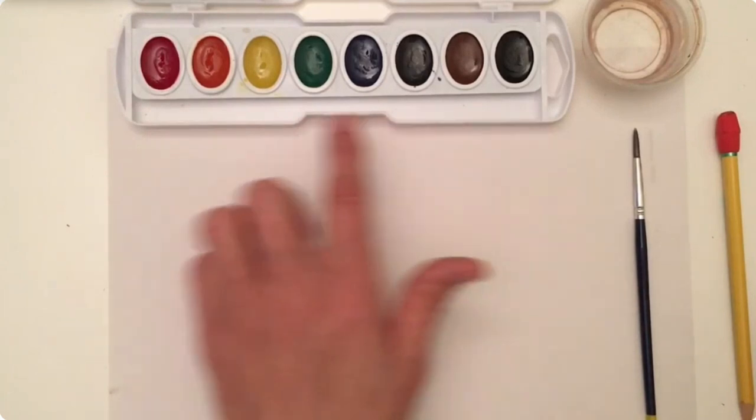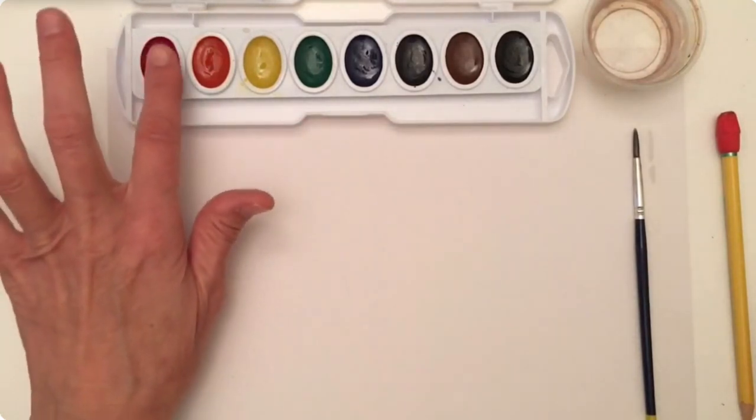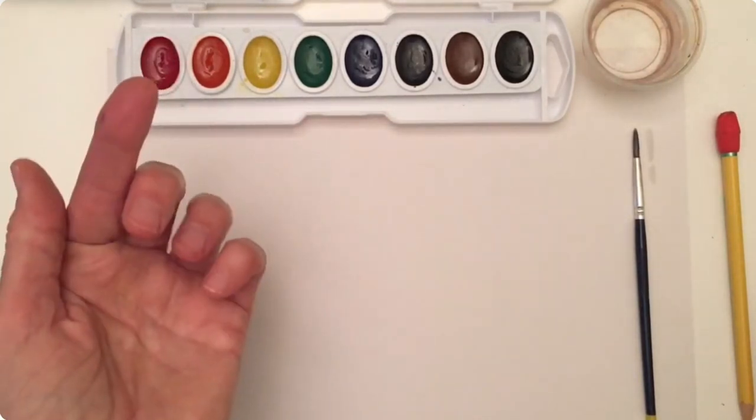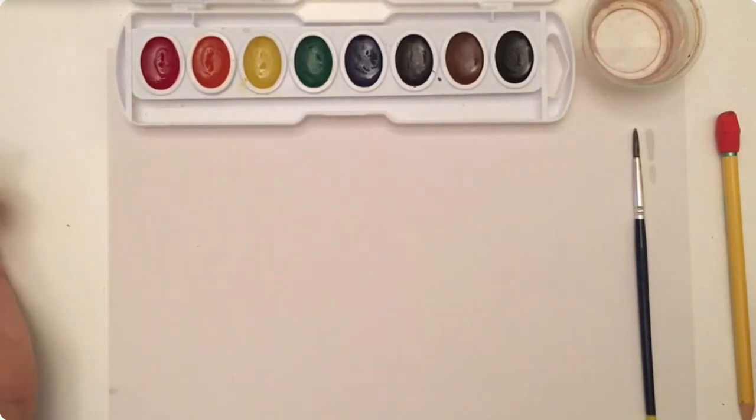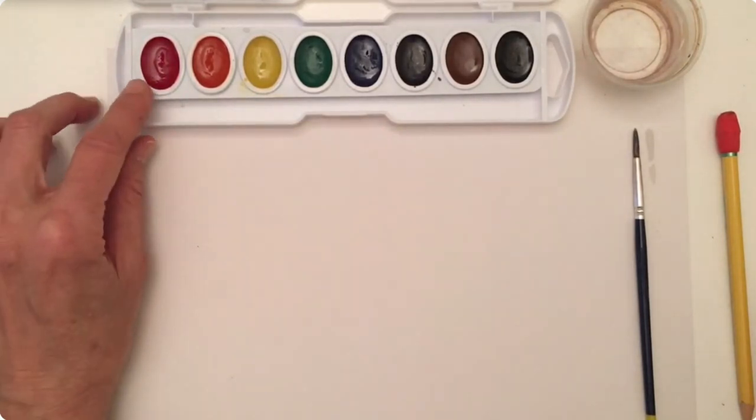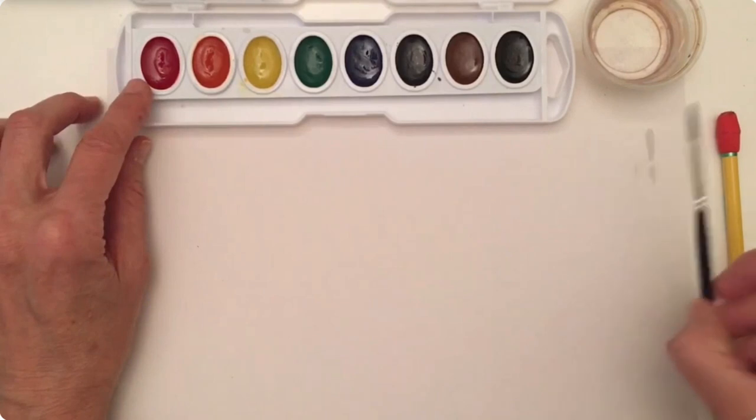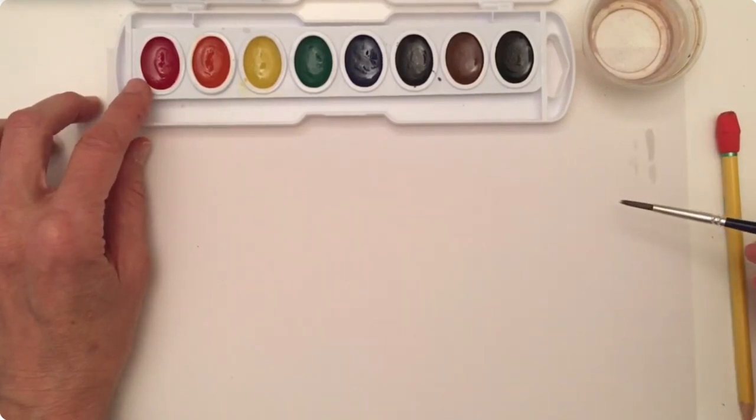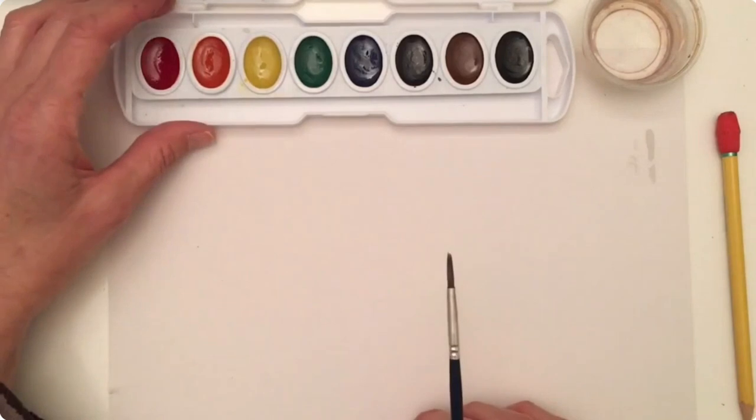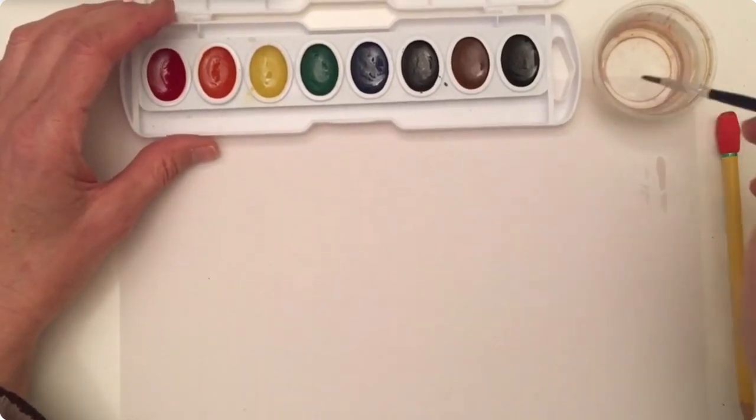Now you'll notice we have all of these different colors. If I go and rub my finger in them right now, you're going to see that I don't get any red on my finger at all because they are dry. And to activate it, I actually have to add water.